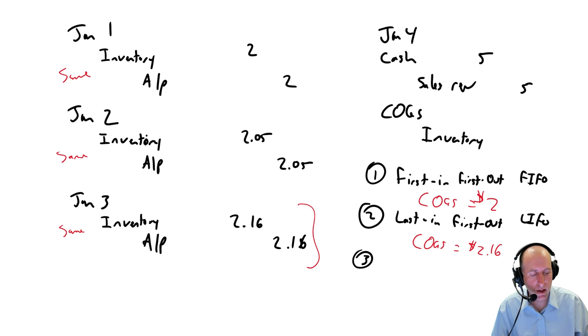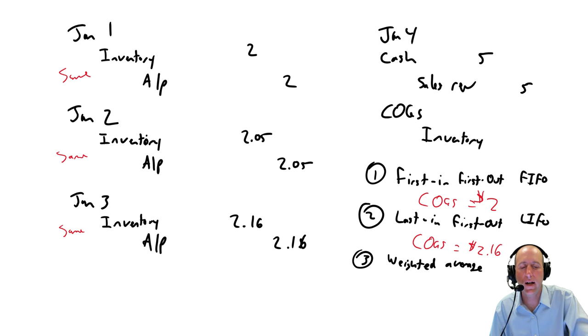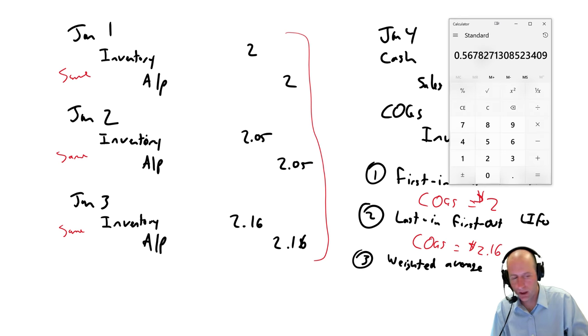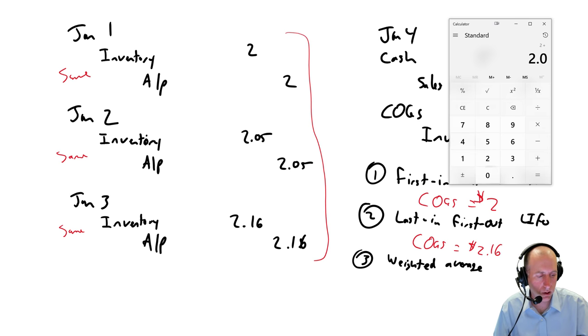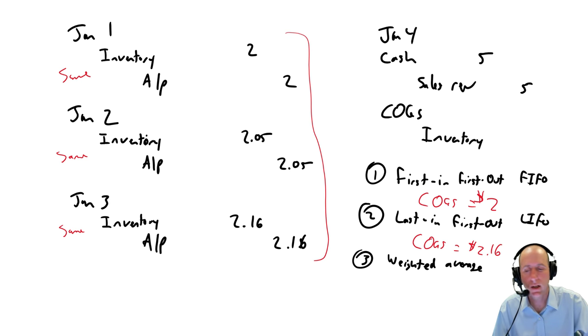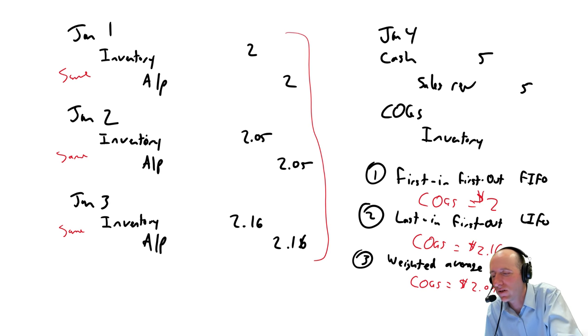Looking at number three, we have what's called the weighted average method. This can sometimes be called the average cost method. The word average is going to be included somewhere in the third method. And as you might suggest, you take an average. It's not a simple average. It's called a weighted average, and we'll learn what that means in future videos. But here, we'll take the average of these three. So if I add two plus 2.05 plus 2.16, 6.21 divided by three is 2.07. $2.07. The reason I chose 2.16 here was because I wanted to make an even number.